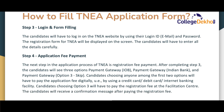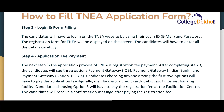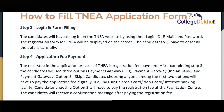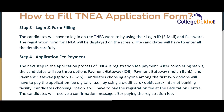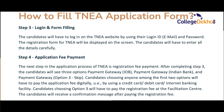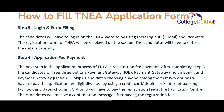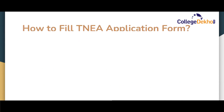The next step is the payment of the application fee. After completing step 3, candidates will see three options: payment gateway for IOB, payment gateway for Indian Bank, and option 3 — skip. Candidates choosing either of the first two options will have to pay the application fee digitally, using a credit card, debit card, or internet banking. Candidates choosing option 3 will have to pay the registration fee at the facilitation centers. Candidates will receive a confirmation message after paying the registration fee and can then proceed to the further steps.